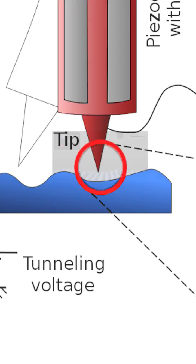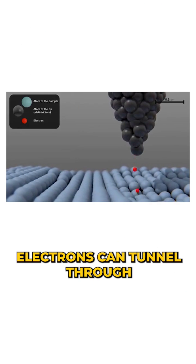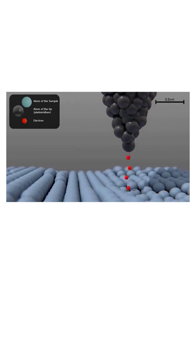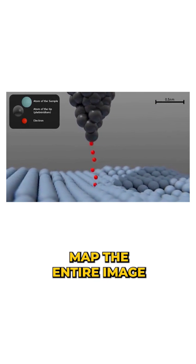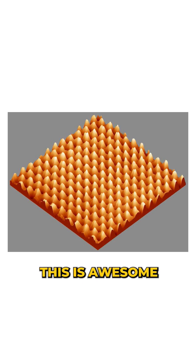An STM has a probe that scans a surface and since electrons can tunnel through the tip of the STM to the surface, by measuring the tunneling current, they can map the entire image of the surface. This is awesome.